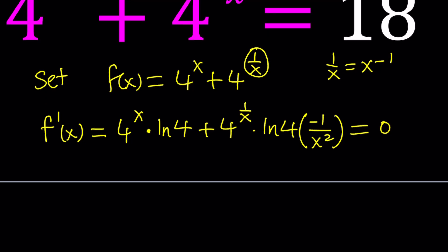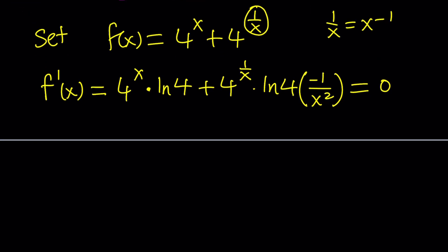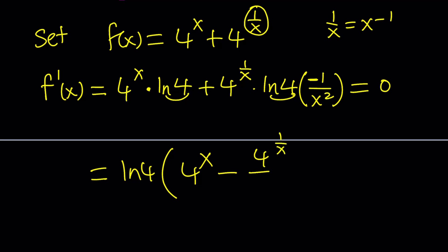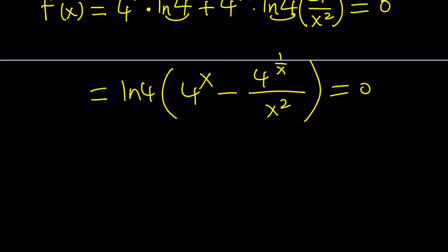Set the derivative equal to 0. Notice that we can cancel out ln 4 since ln 4 is not 0. We get 4 to the power of x minus 4 to the power of 1 over x divided by x squared, all equal to 0. Making a common denominator gives us 4 to the x times x squared equals 4 to the power of 1 over x, where x is not 0. If x equals 1, we get 4 times 1 equals 4, which is true — so x equals 1 is a critical point.